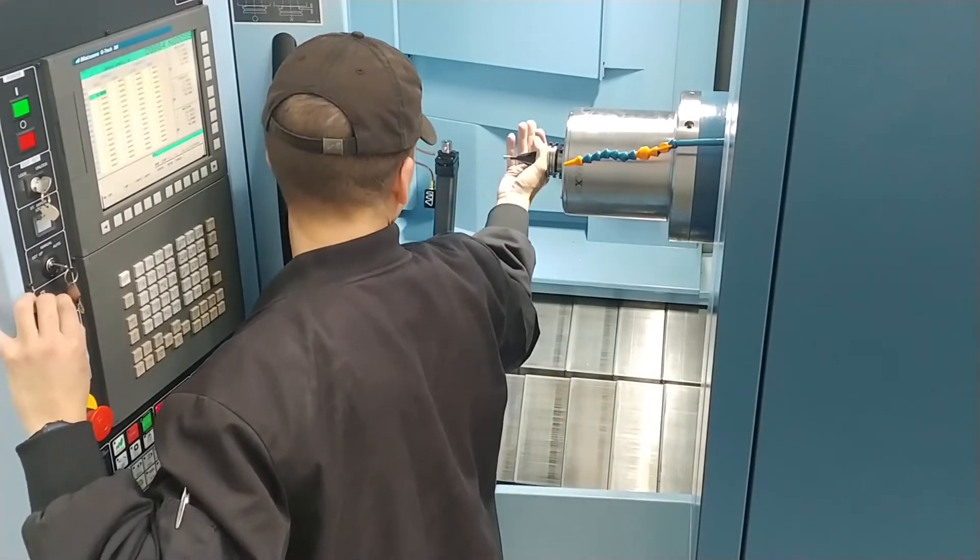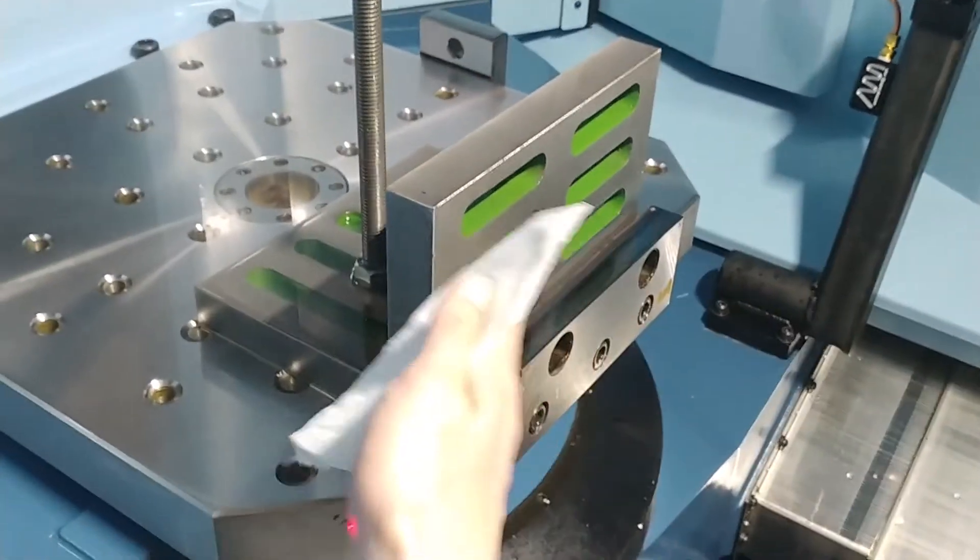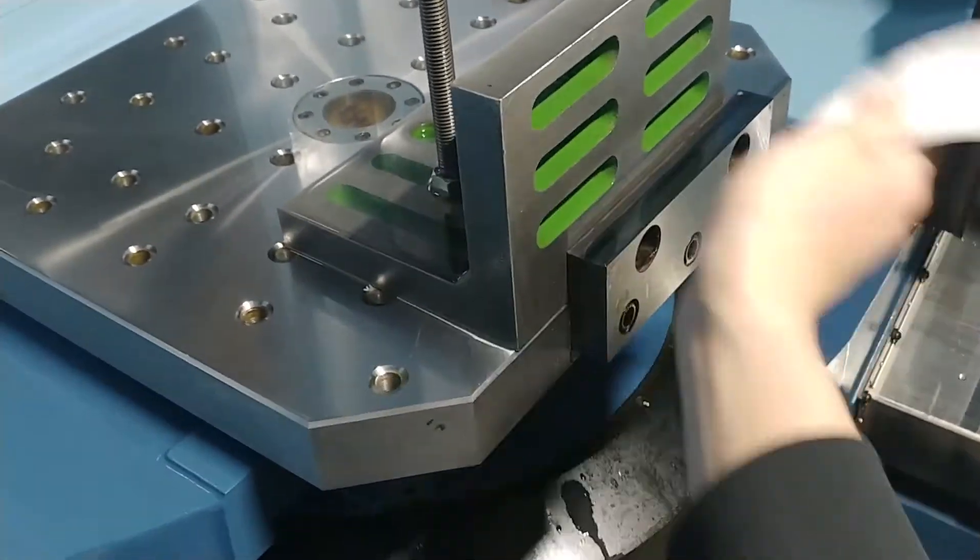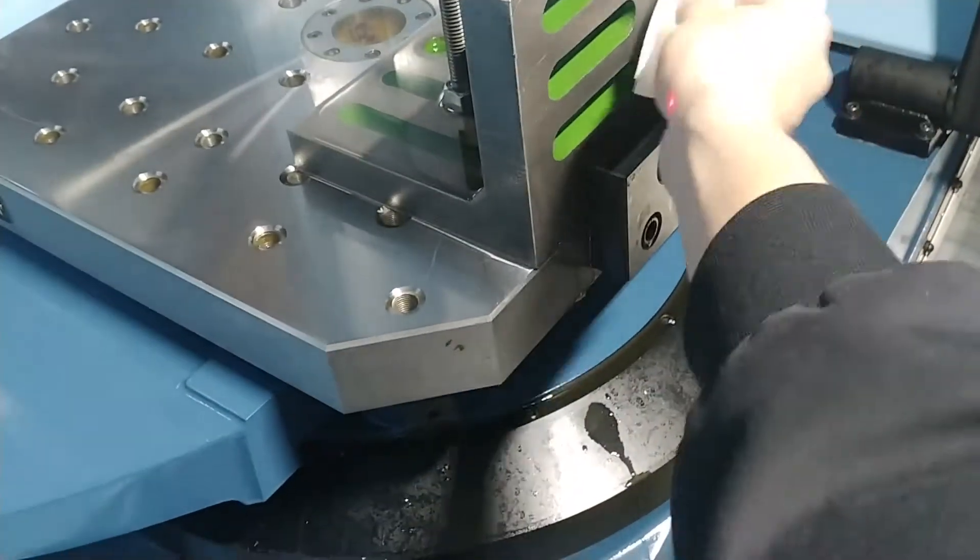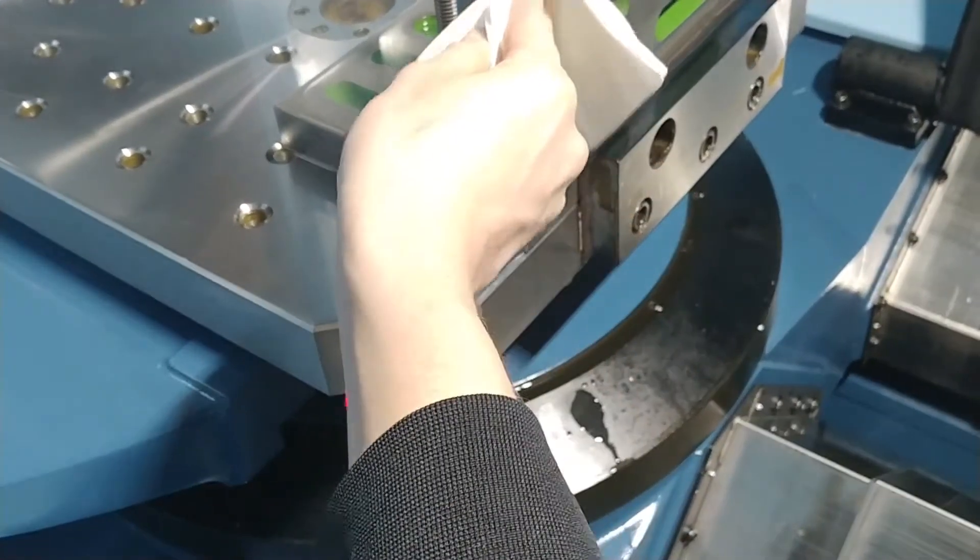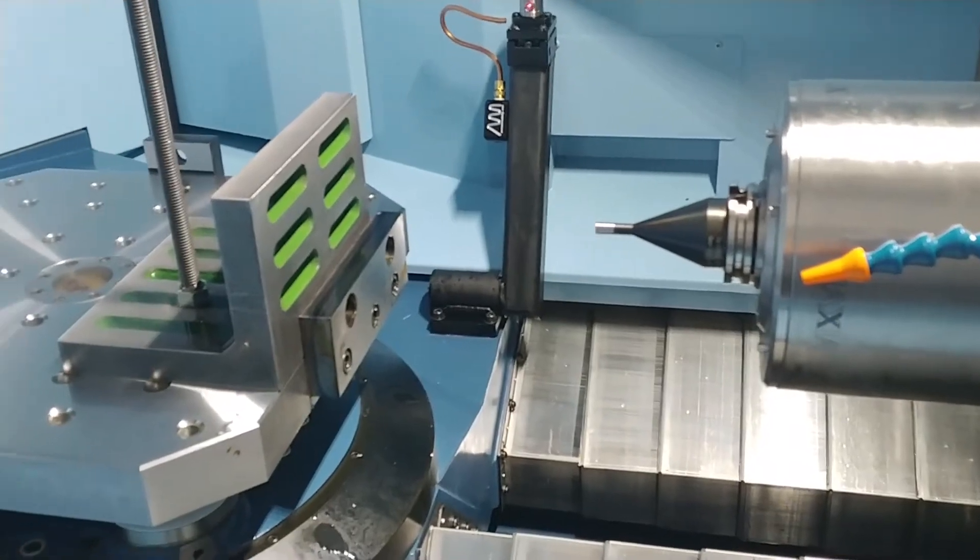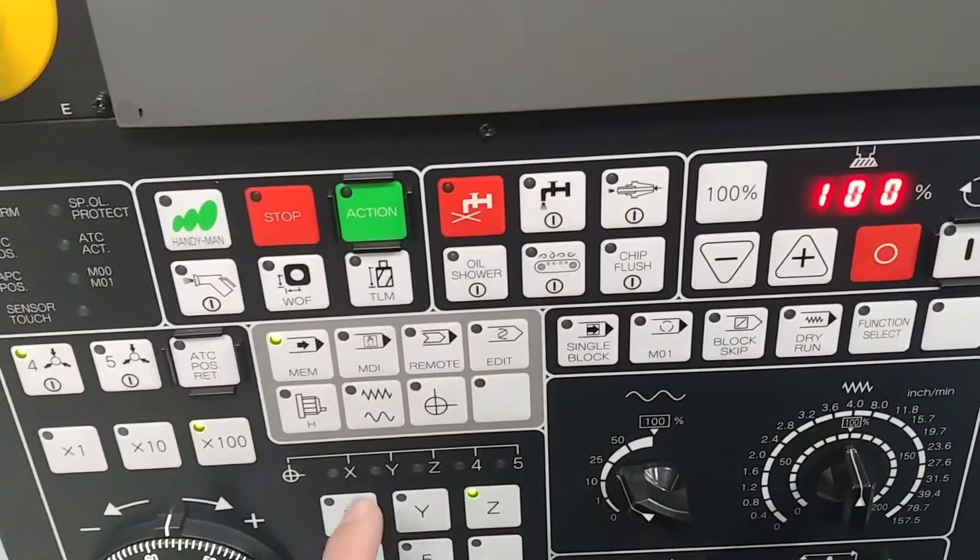Load the master tool into the spindle. Clear off an open area of the table so that it is free of chips and coolant. If you are using a 5-axis mill, make sure all rotary axes are homed. Jog the master tool over this area.